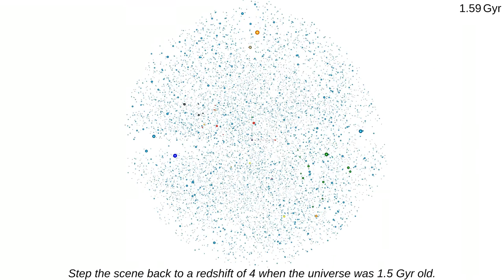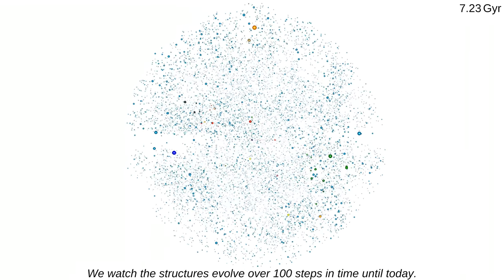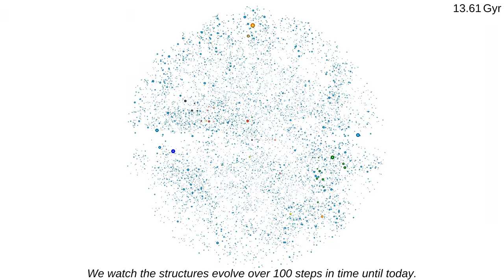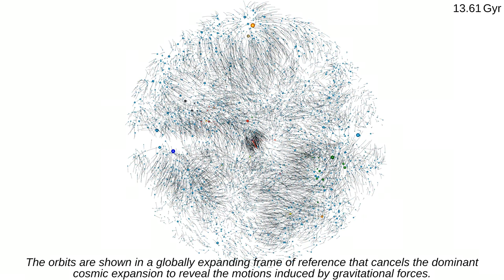Step the scene back to a redshift of four when the universe was 1.5 gigayears old. Structure was only beginning to form. Elements at this early time represent the dispersed matter that will gather into the collapsed structures observed today. We watch the structures evolve over 100 steps in time until today. The orbits are shown in a globally expanding frame of reference that cancels the dominant cosmic expansion to reveal the motions induced by gravitational forces.